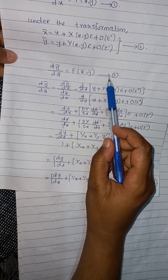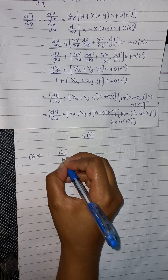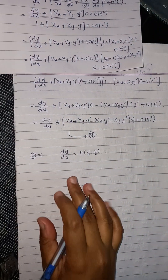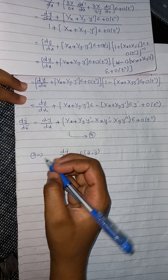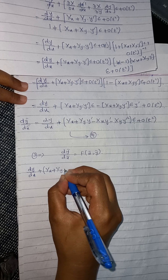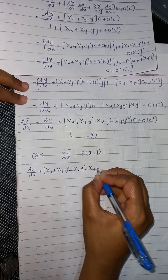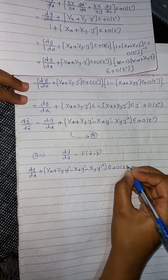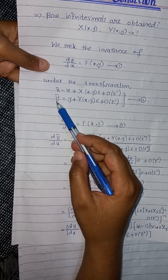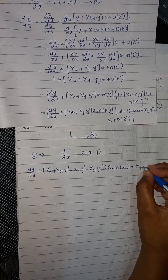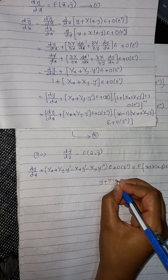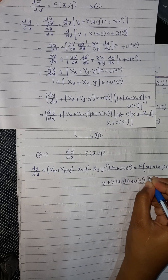Using all values in equation number 3 — which is dȳ/dx̄ = F(x̄, ȳ) — we substitute: the left-hand side is equation 4, and on the right-hand side we substitute the values of x̄ and ȳ from equation 2, giving F(x + X(x,y)·ε + O(ε²), y + Y(x,y)·ε + O(ε²)).